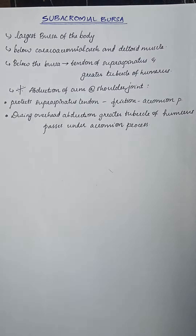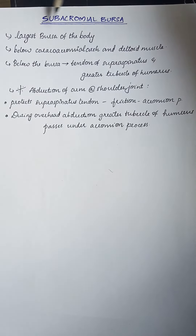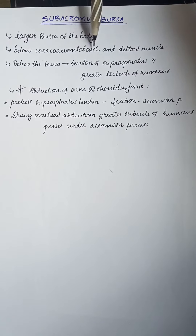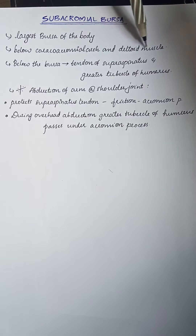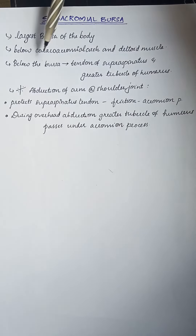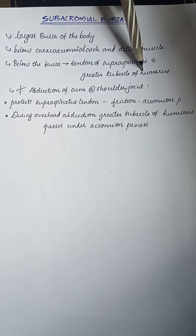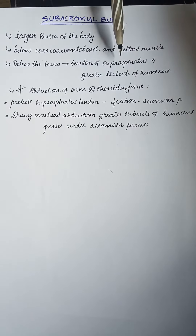Coming to the subacromial bursa, this is the largest bursa of the body. It is situated below the coracoacromial arch and the deltoid muscle. Below the bursa there is the tendon of supraspinatus and the greater tubercle of the humerus to which the muscle is attached.